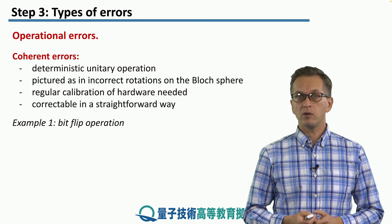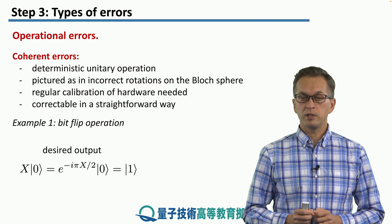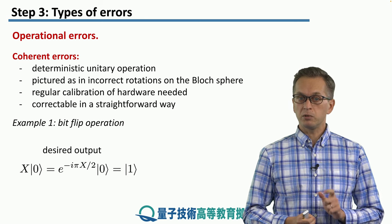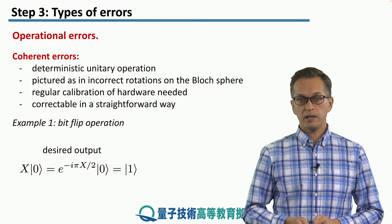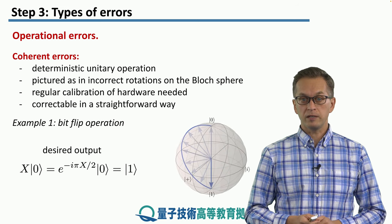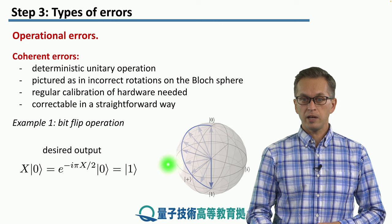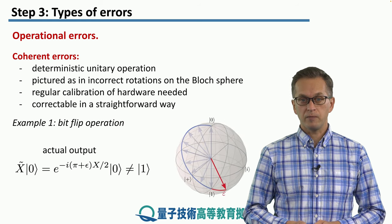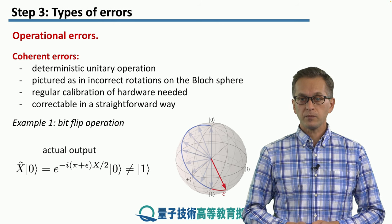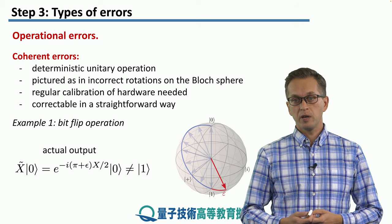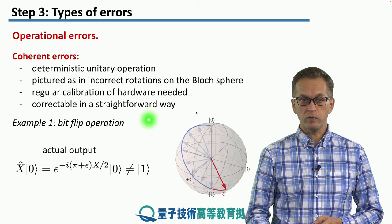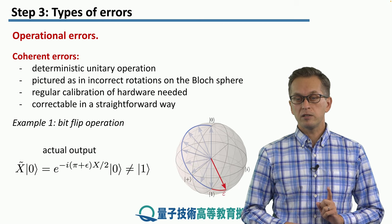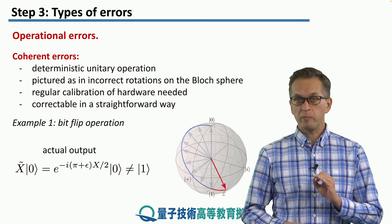Let's look at an example of a bit flip operation. We start with a qubit in the zero state and try to apply the Pauli X operation, which can be pictured as a rotation around the x-axis of the Bloch sphere, and what we get is ket one. When there's a coherent error, what happens is that you don't rotate by the desired angle — you over-rotate or under-rotate by some small value epsilon. So your final output state is not one anymore, but some other state. Crucially, even though it's not the ideal state, it's still a pure state, represented by a point on the Bloch sphere.